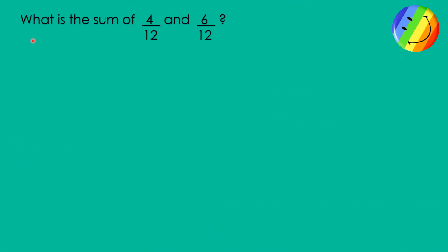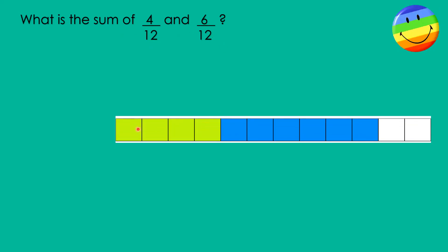Next, what is the sum of 4 twelfths and 6 twelfths? Look at this one. This is 4 twelfths and this is 6 twelfths.